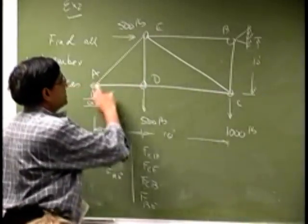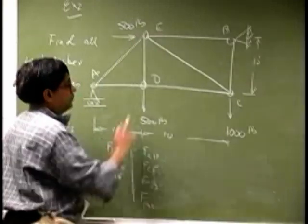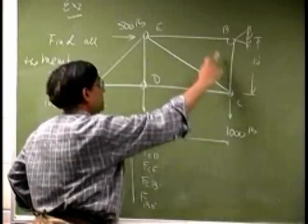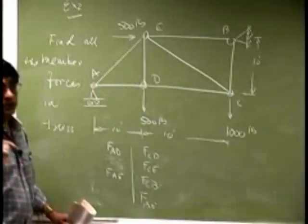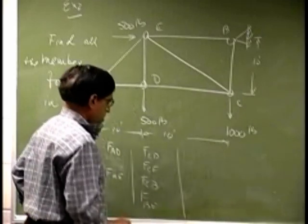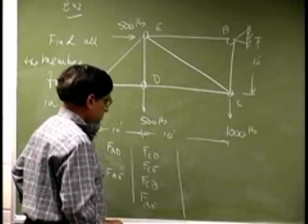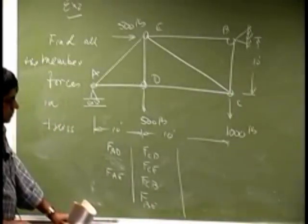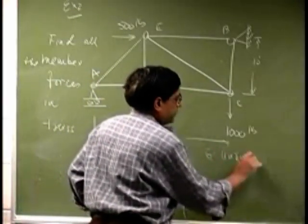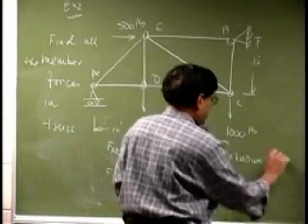Force in here is taken as FAE. Then force in here is taken as FCD, then forces taken as FCE, FCB, and FBE. So each member has one single unknown force, so that gives you six unknown member forces.